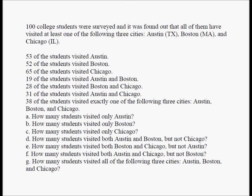100 college students were surveyed and it was found that all of them visited at least one of the following three cities: Austin Texas, Boston Massachusetts, and Chicago Illinois. 53 students visited Austin, 52 visited Boston, 65 visited Chicago. 19 visited Austin and Boston, 28 visited Boston and Chicago, 31 visited Austin and Chicago, and 38 visited exactly one of the three cities. We need to answer: how many students visited only Austin, only Boston, only Chicago, and how many visited both Austin and Boston but not Chicago, both Boston and Chicago but not Austin?